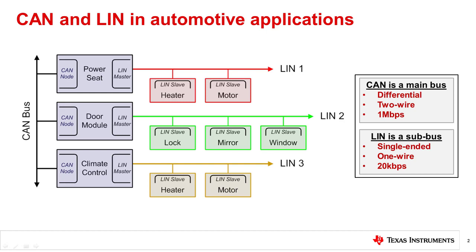In today's automobiles, CAN is the main bus that connects multiple nodes throughout the vehicle. It is a differential, two-wire interface. Classic CAN operates up to 1 megabit per second, and CAN FD operates up to 5 megabits per second. LIN is a sub-bus. It is a single-ended, one-wire interface that communicates at 20 kilobits per second.